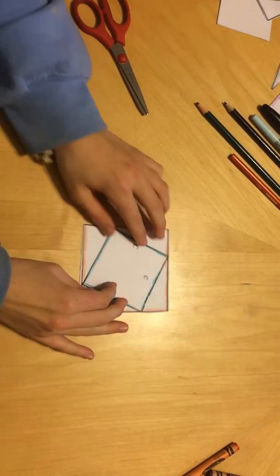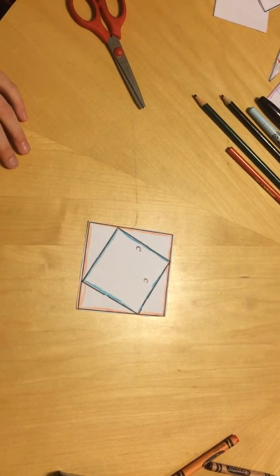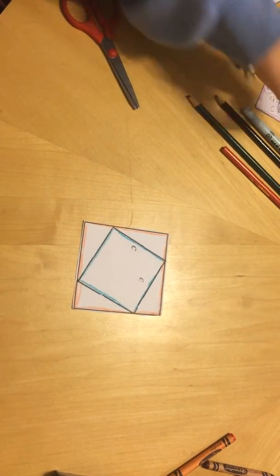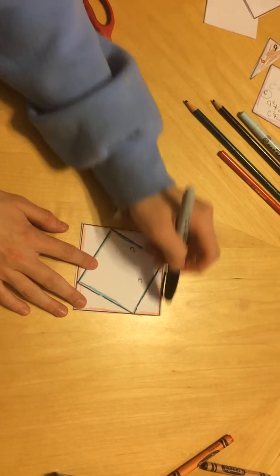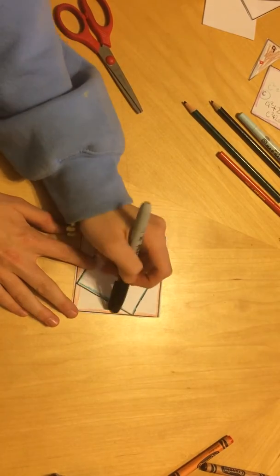The next step is to label the shortest side of all the triangles A. There are four triangles, all on the outside, making up the larger square.